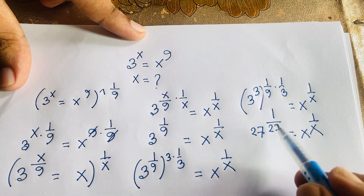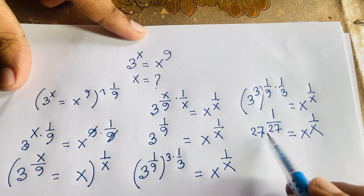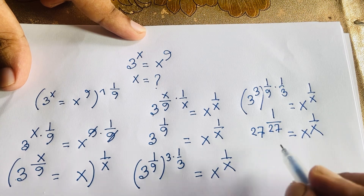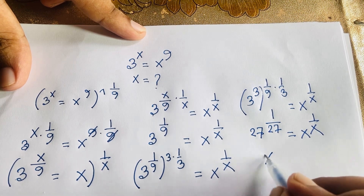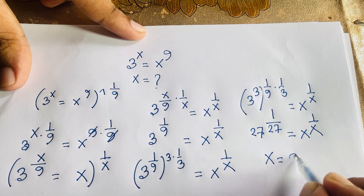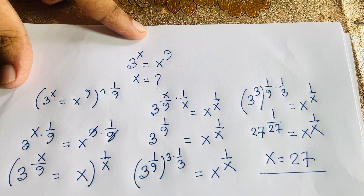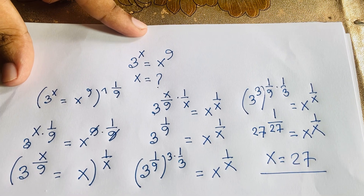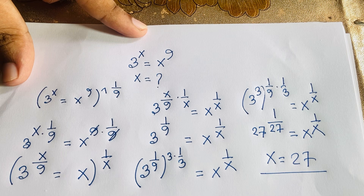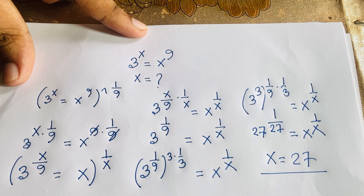Both sides are equal, so I can say easily that x is equal to 27. This is our final answer — x is equal to 27 in this Math Olympiad question. Thank you all. If you enjoyed this video, please subscribe to my channel for other interesting videos. Goodbye, take care.